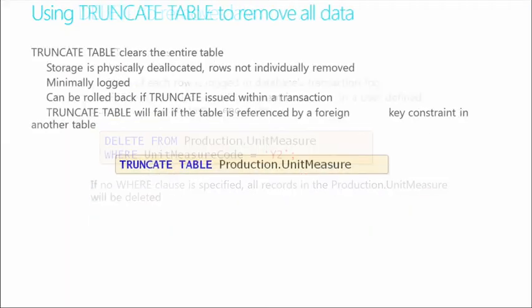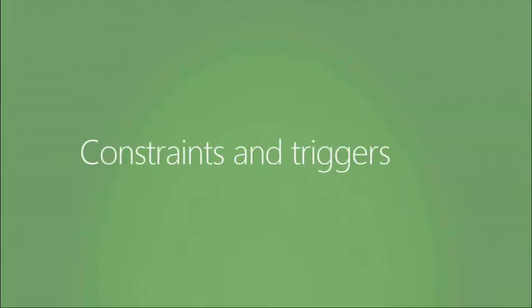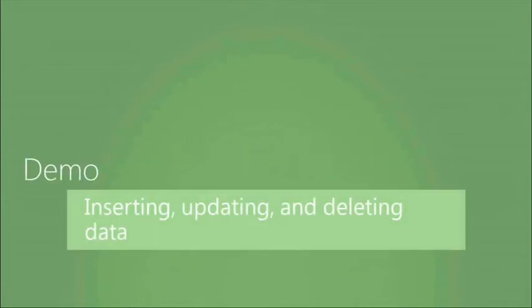So we did inserts, updates, and deletes with XML. Now let's discuss constraints and triggers. We looked at adding content several different ways, updating content, and deleting content. One thing we also need to be concerned about is data integrity. When inserting or updating content, we can use constraints and triggers to make sure what we're adding is appropriate or valid, and to ensure other related tables are updated accordingly. We can create four or five different types of constraints.